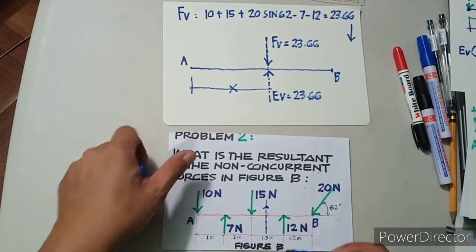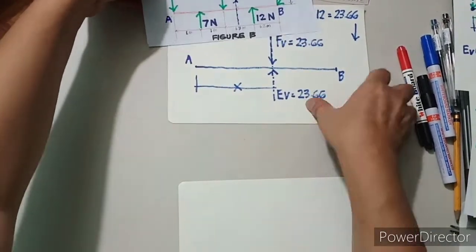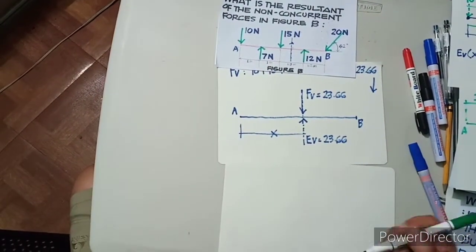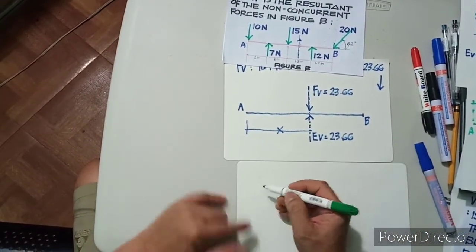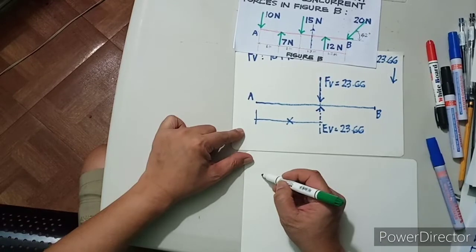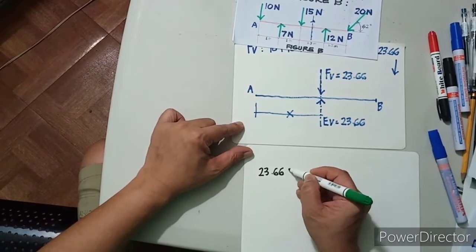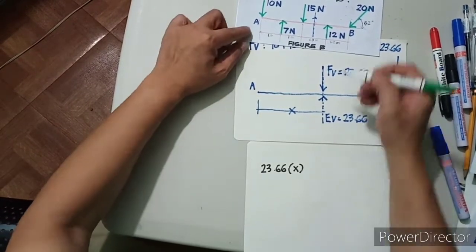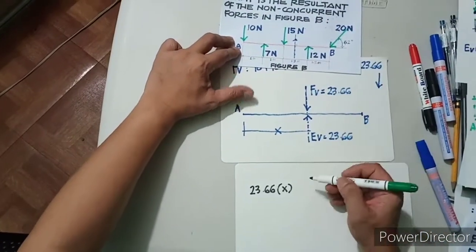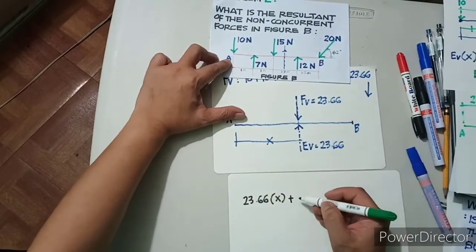Since that is the location of your equilibrium, you have an equation taken from point A. Assuming the balancing force is 23.66, it is in equilibrium. So you have 23.66 multiplied by X — that's your distance X — plus, following the sign convention that all forces going in that direction are positive.